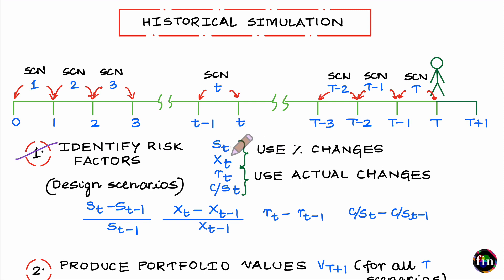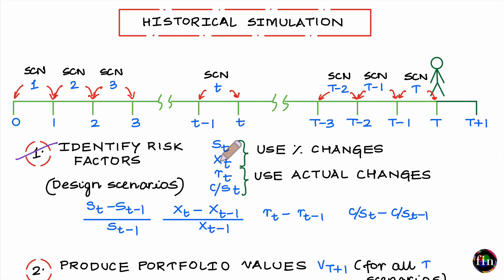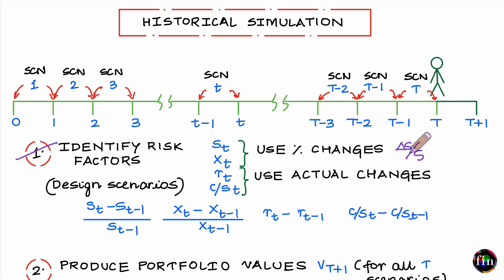For example, for a stock price S_t observed as of the close of day t, the change in the stock price between the close of day t-1 and the close of day t is more appropriately expressed as ΔS divided by the starting level S — a percentage change or relative change.